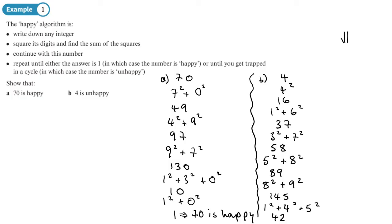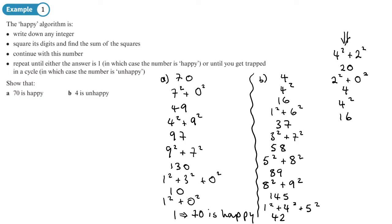Continuing: four squared plus two squared gives 16 plus 4, which is 20. Then two squared plus zero squared is just 4. Then 4 squared is 16. Notice what's happened — when we get to 4, we're basically back at the start of our list of numbers.